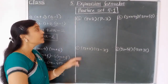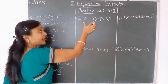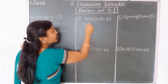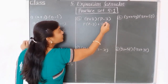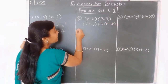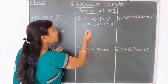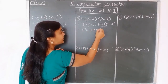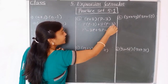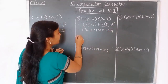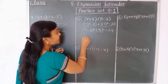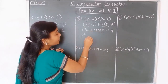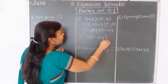Third example: p plus 8 into p minus 3. Again this bracket multiplied to this bracket. p into p gives p squared, p into minus 3 gives minus 3p, 8 into p gives plus 8p, 8 into minus 3 gives minus 24. Again p squared, plus and minus but greater number is 8, so positive sign: 8 minus 3 gives 5p, minus 24. This is our answer.